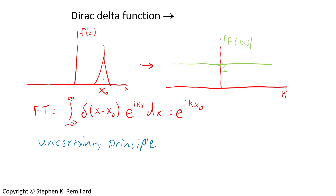This is the uncertainty principle. If x, which is position, is well defined — which it is with the delta function — then k, which is momentum, is completely unknown.